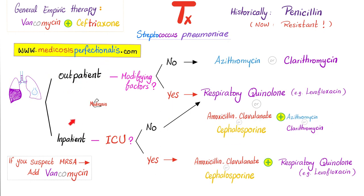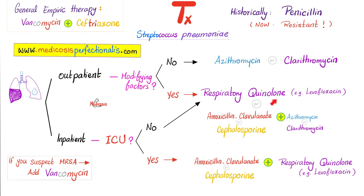For a hospitalized patient — for inpatient therapy for pneumococcal pneumonia — ask yourself: are we in the ICU or not? If not in the ICU, do exactly what we did for the outpatient with modifying factors: a respiratory quinolone, or a beta-lactam plus azithromycin or clarithromycin.